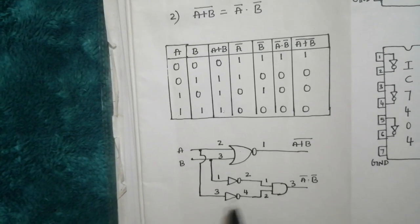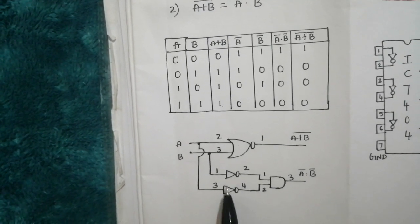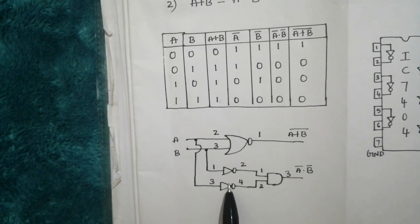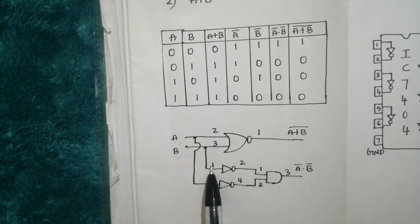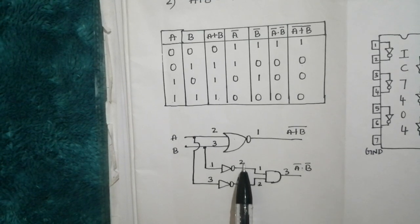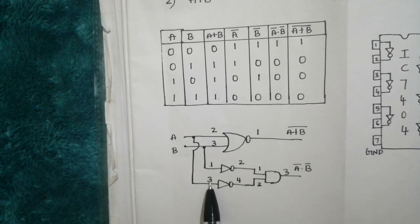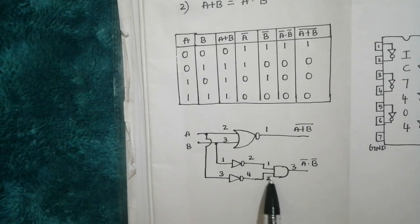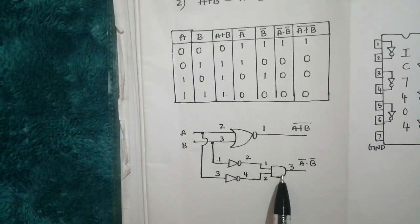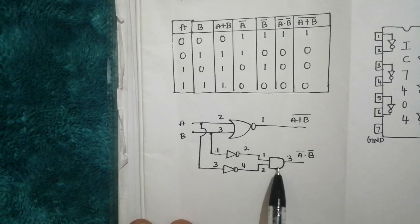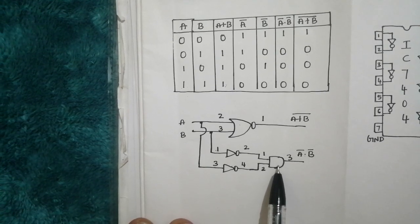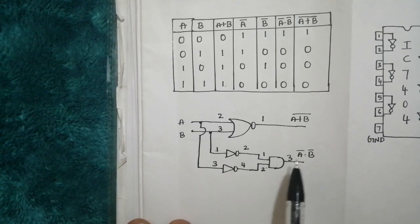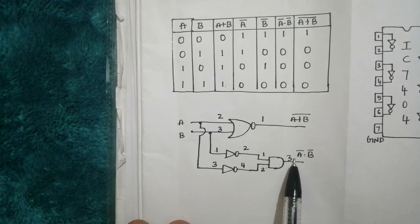Here we will assign the pin numbers. Again this is a NOT logic gate, IC number is 7404. So the first pin is acting as input, second pin is output, third pin is input, fourth pin is output. So this is AND logic gate. IC number for AND logic gate is 7408. First pin and second pin are acting as input, third pin is acting as output.